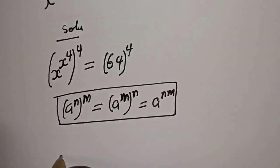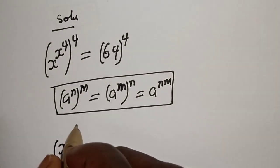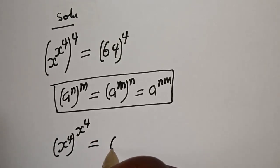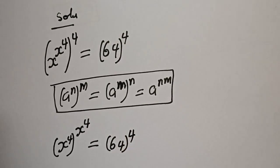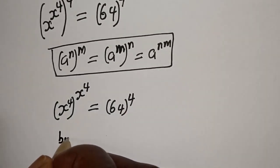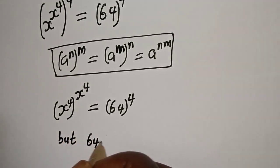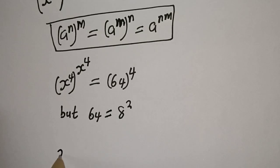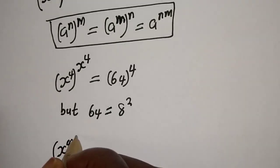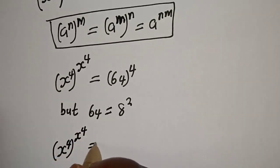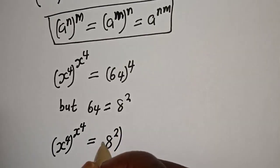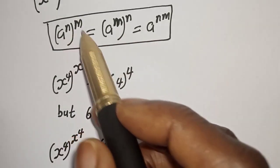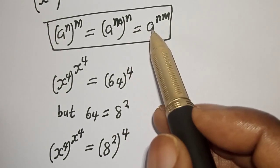This can be written as S raised to power 4, to the power of S raised to power 4, which from this rule is equal to 64 raised to power 4. Using the rule that A raised to power N to the power of M equals A raised to power M to the power of N, equals A raised to power NM.